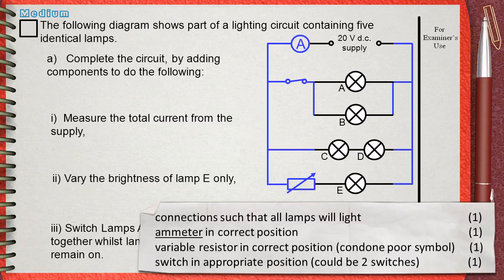The second mark is for the ammeter in correct position. Actually mark schemes for diagram questions are not clear enough. But the examiner knows exactly where the ammeter must be. It must be beside the power supply.